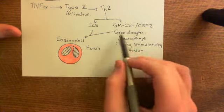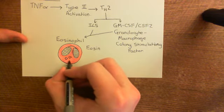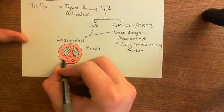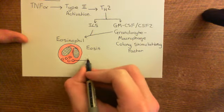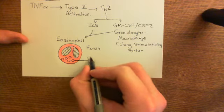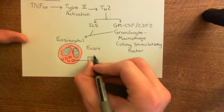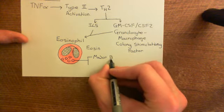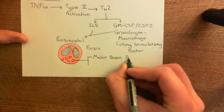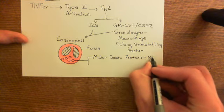Eosinophils are granulocytes — they have granules, little vesicles full of contents. The granules contain two horrendously cytotoxic proteins: major basic protein (MBP) and eosinophil cationic protein (ECP).